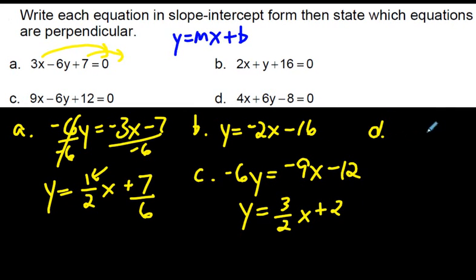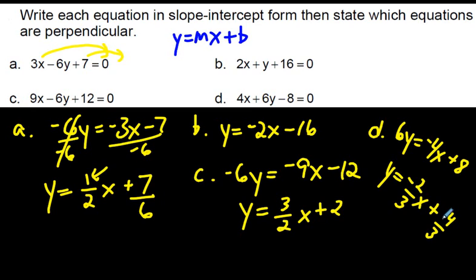And the last one is d. 6y is equal to, 4x plus 8. Divide everything by 6. This isn't a pretty answer, but anyway, it's going to be negative 4 over 6. Let's reduce that. So that'd be 2 over 3. And 8 divided by 6, if we cut them both in half, we'd have positive 4 over 3.